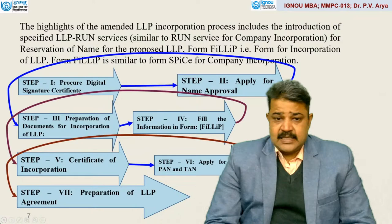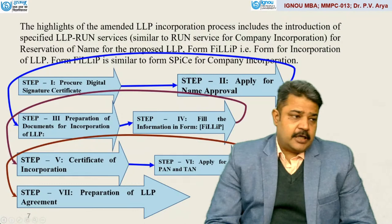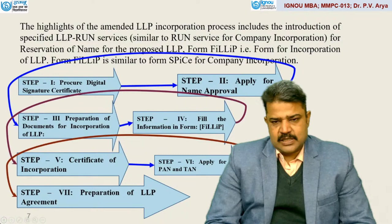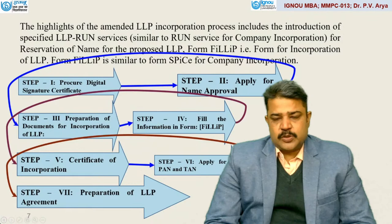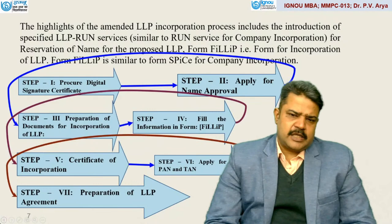The second step is to apply for name approval. You need to explore a specific name for your LLP that should be unique, and it should not include the name of a country. Once approved by the respective agency, you can move forward. The name should be unique and appealing with reference to the type of work. At this step, it is also preferred to explore your trademark and logo as well.